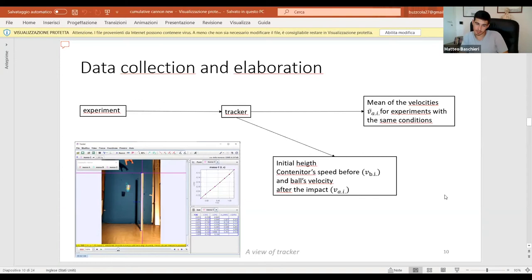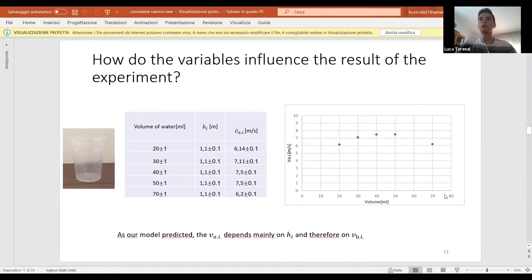This is a comparison of what we found out during the experiment and what was our model. The first thing to notice is how the variables influence the result of the experiment. We said before that there is no dependence on the mass, the volume of water used. And as we can notice for this particular cup, but also for the other containers that we used, even increasing the water used during the experiment and maintaining the same initial height, the velocity of the ping pong ball would just remain quite constant during all the time, around seven meters per second. And this confirms our theory about our model that says that there is no dependence on the mass.